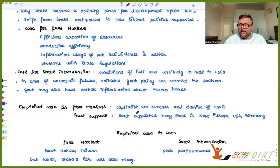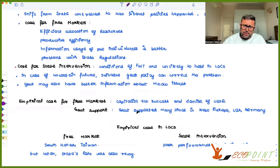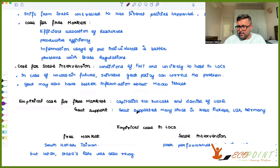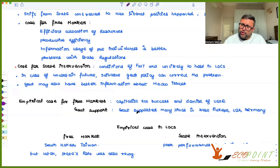People who argue for state intervention say: look at LDCs, you think all the assumptions of the first welfare theorem can be applied here? They are not likely to hold. There is information asymmetry in LDCs, there are state-controlled monopolies, and other monopolies too. In case of monopolies, public goods, and information asymmetry, the conditions of the first welfare theorem are not going to hold, so you should have state intervention.